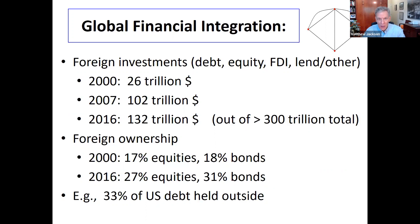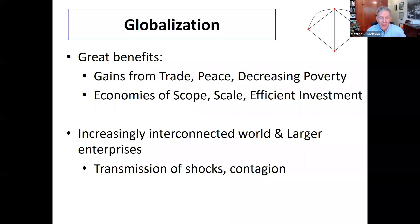The great benefits of globalization are gains from trade, increasing peace, decreasing poverty, economies of scope and scale, and more efficient investment. But there's also transmission of shocks and contagion, which we saw in 2008 play out. There are various reasons we shouldn't be complacent about that, especially in today's world with global supply chain issues. So we want to take a look at understanding regulation in these markets.